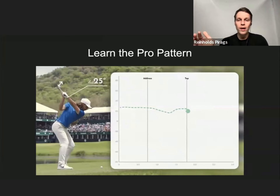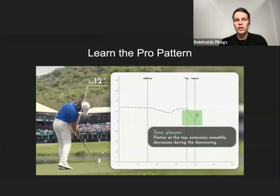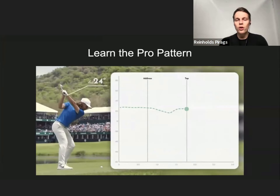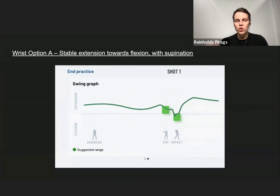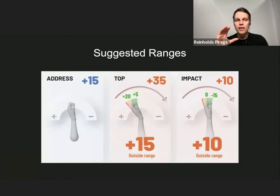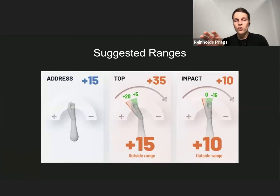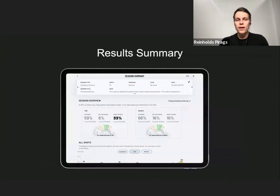The good news is that this pro pattern has been measured and implemented inside the app. You can learn the wrist option A pattern — we found the ranges that players with this pattern have on average and placed them in the app as a clubface control mode. After every swing, you see whether you got in range or outside it. For example, it might show 15 degrees outside the range at the top or plus 10 degrees at impact, so you can track progress over each session.